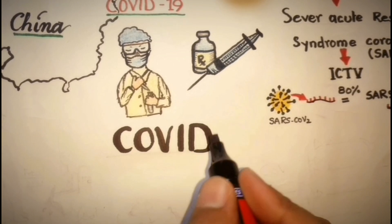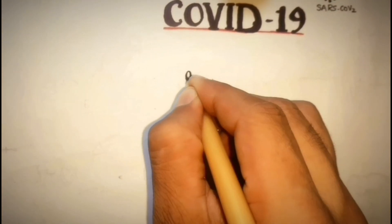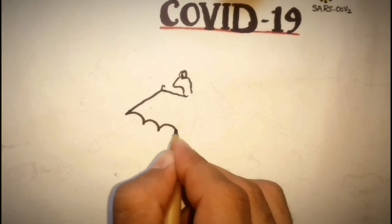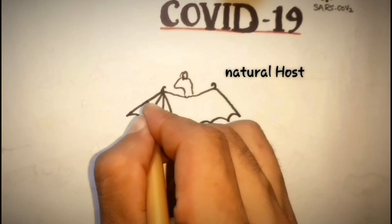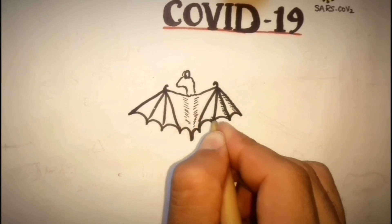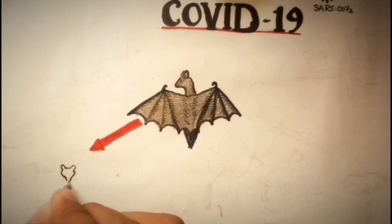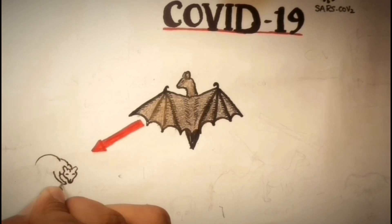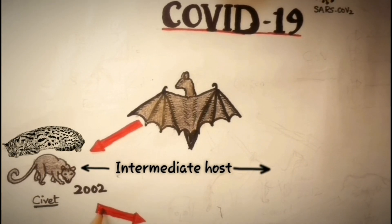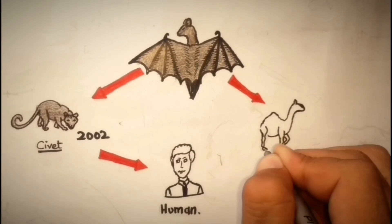It is suggested that this virus is of zoonotic origin because all human coronaviruses that have infected humans till now are of zoonotic origin, and bats are most likely the natural hosts for all presently known coronaviruses. Coronaviruses found in bats cannot directly infect humans unless they undergo some mutations or recombination in an intermediate animal host — for example, the intermediate animal host of SARS coronavirus is the civet before transmission to humans in 2002, and camel for MERS coronavirus in 2012.